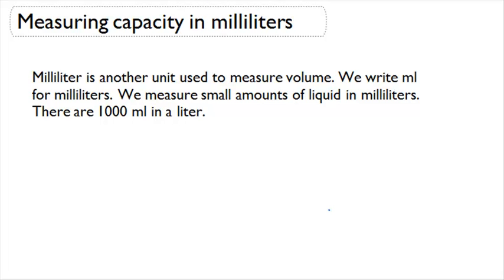Now we're going to talk about how to measure capacity in milliliters. A milliliter is another unit of measure that is used for volume and capacity. We write ML to represent milliliters. We measure smaller amounts of liquid in milliliters than we do liters. There are 1000 milliliters in a liter.